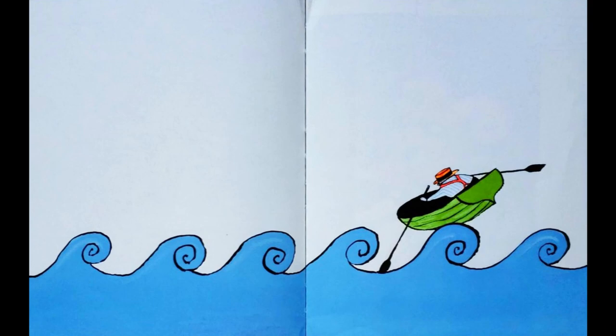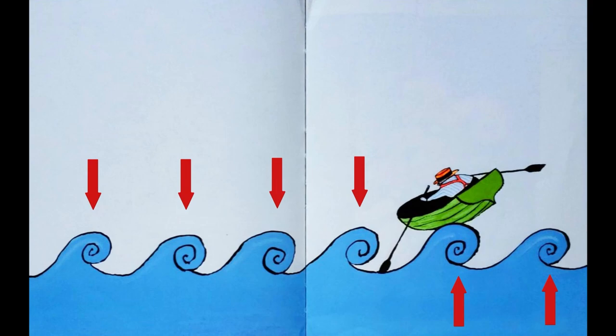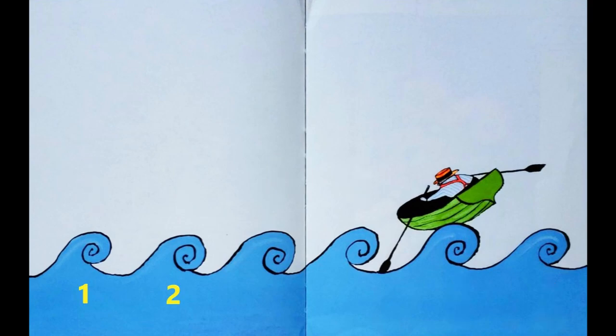Can you find the curly shapes on this page? It's the waves. How many waves can you count? Let's count together. There are six curly waves on this page that look like snail shells.